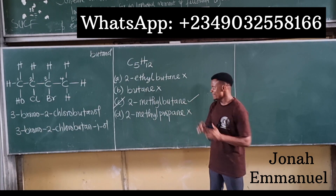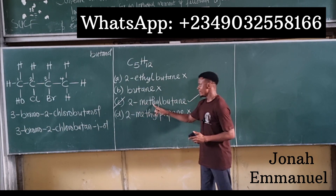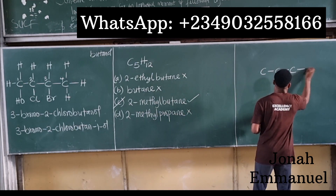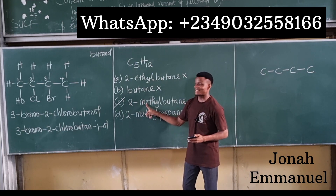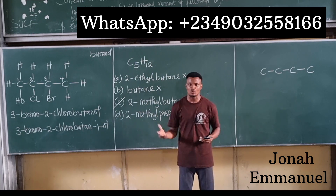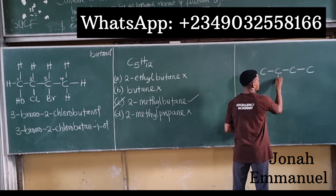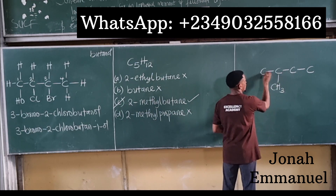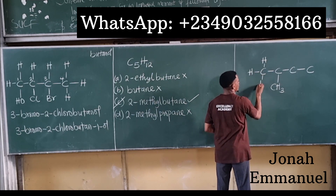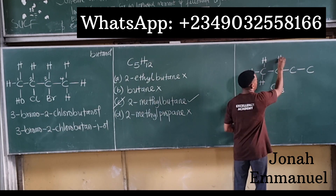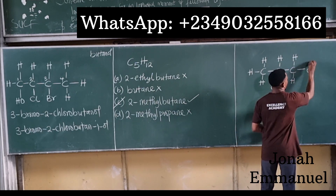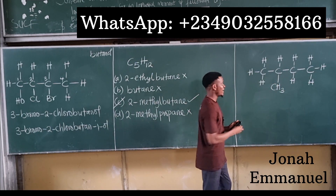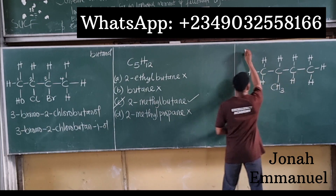Just to be sure, let me draw the structure for 2-methylbutane. First I draw the butane chain: 1, 2, 3, 4. With 2-methyl, the methyl group (CH3) is attached to carbon 2. I balance up the hydrogens on each carbon. Counting carbons: 1, 2, 3, 4, 5 — that's C5.